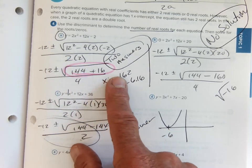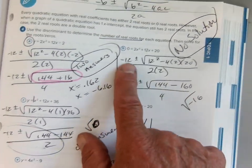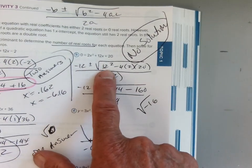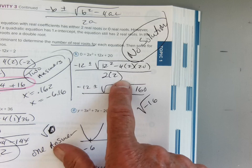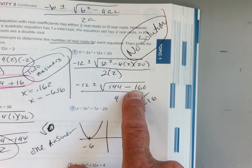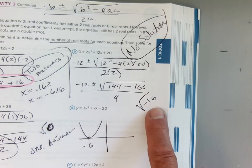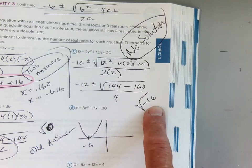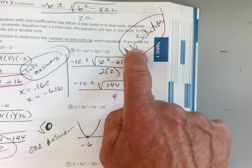Example two: we did negative b plus or minus b squared minus 4ac all over 2a. We wound up with 144 minus 160. We subtract those two values, get negative 16. It's not going to work—you can't take the square root of a negative number, so you get no solution.